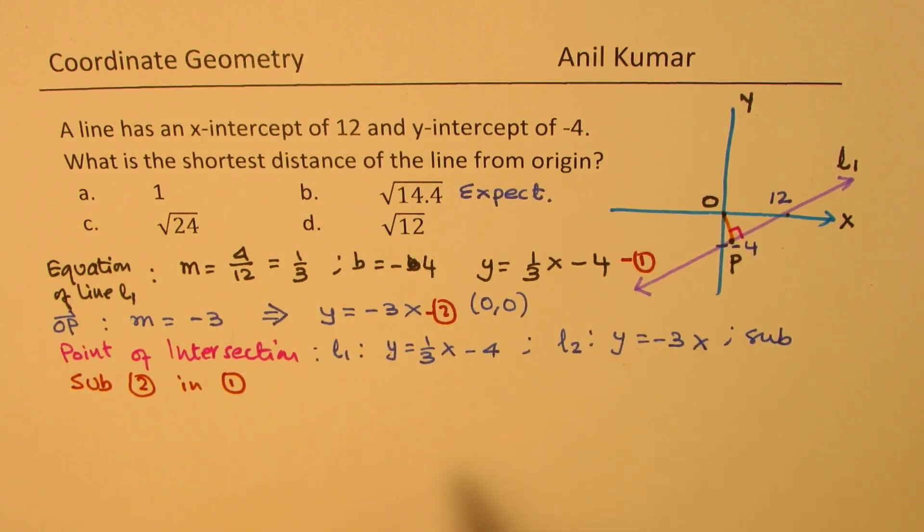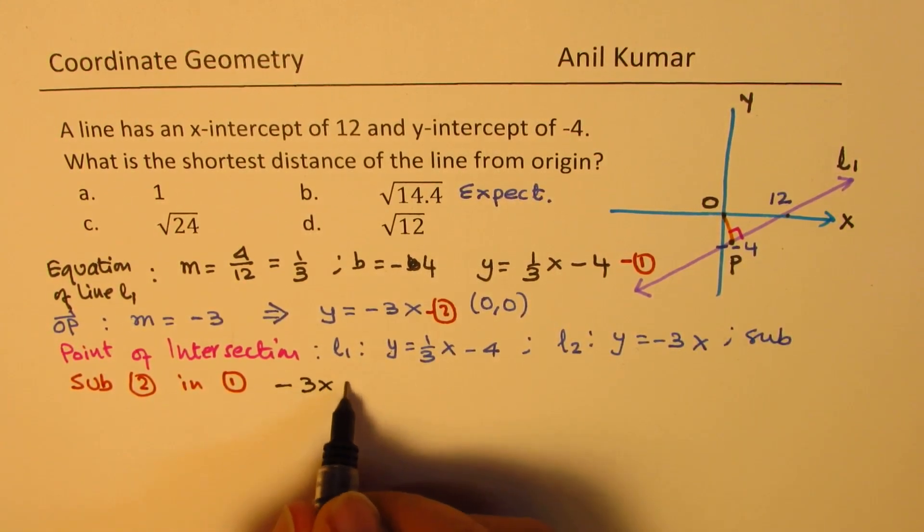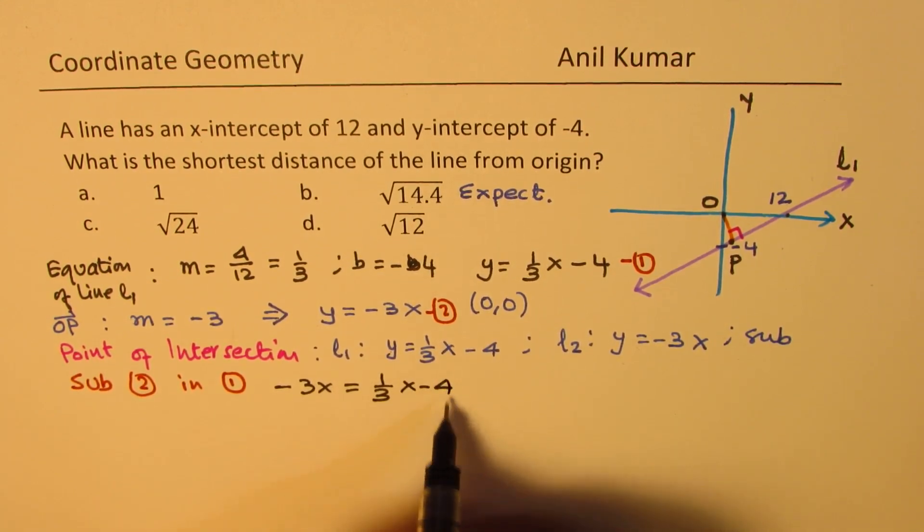So, if you do that, you get minus 3X. So, Y is equals to minus 3X should be equal to 1 over 3X minus 4. And now, we can cross multiply and get the value of X.